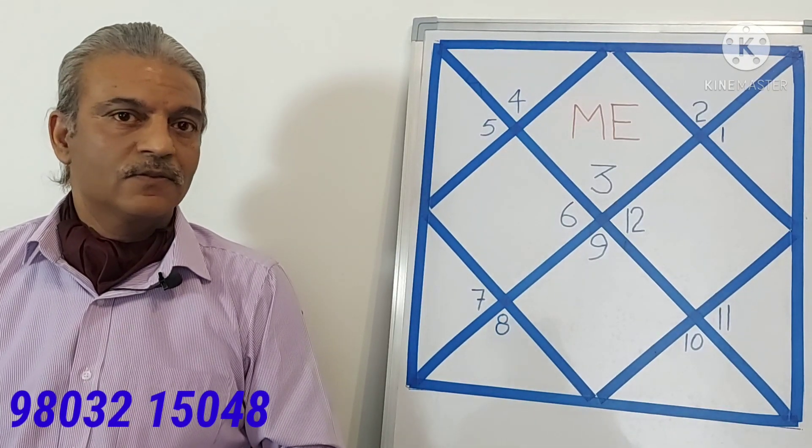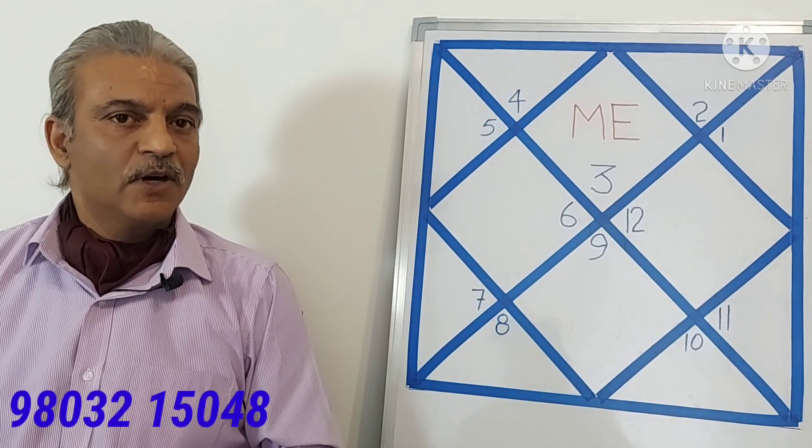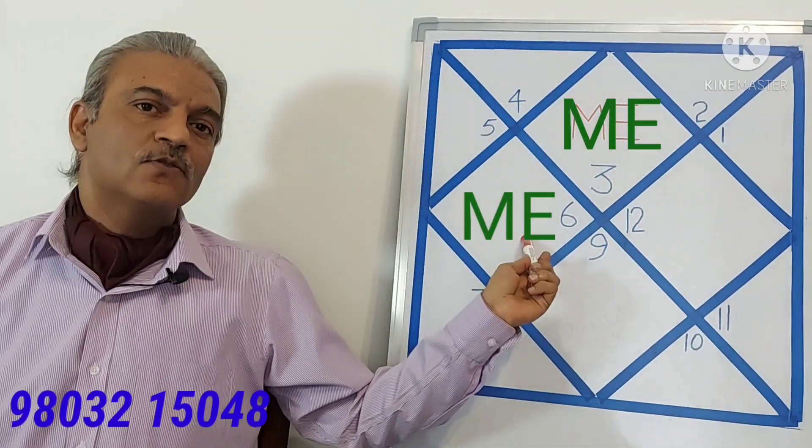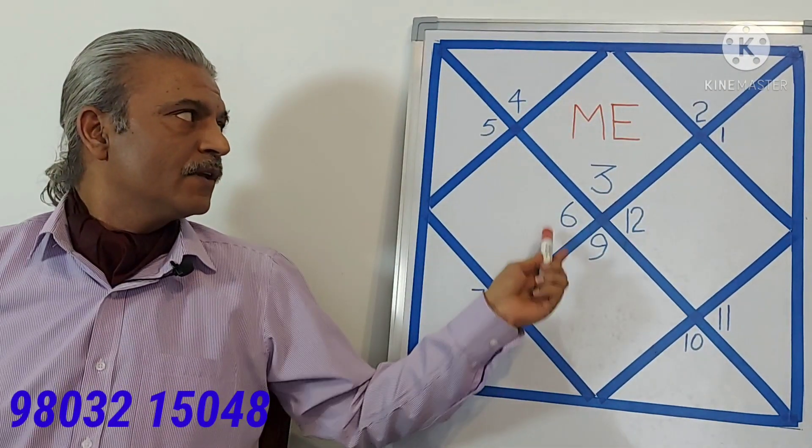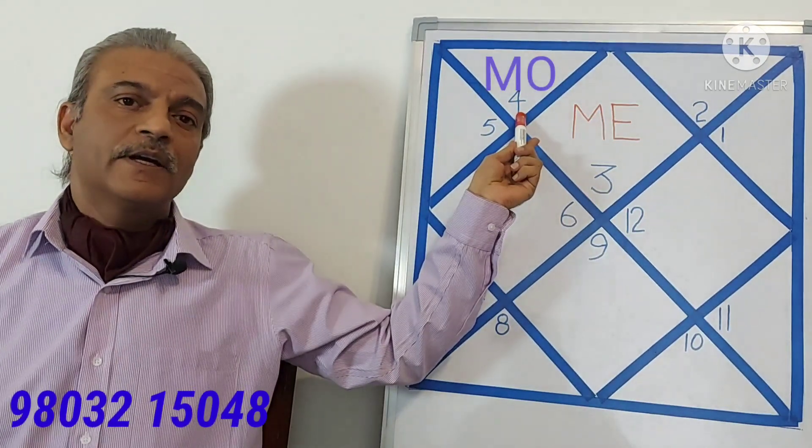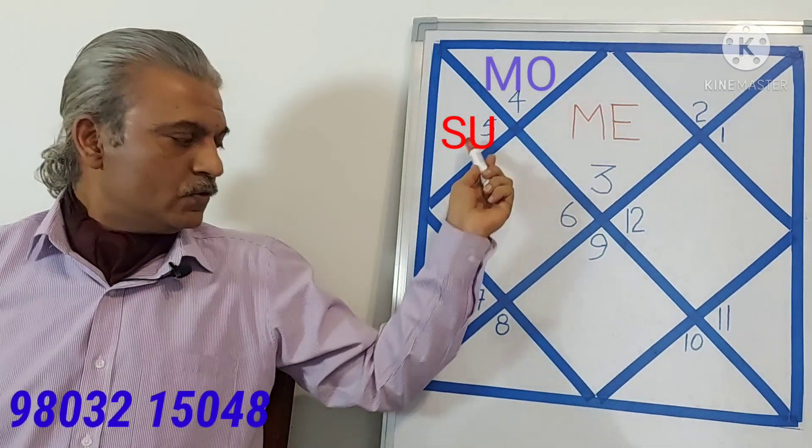Mercury is the Lord of Ascendant. So Mercury gets the first house and the fourth house in the horoscope. Moon gets the second house. Sun gets the third house.